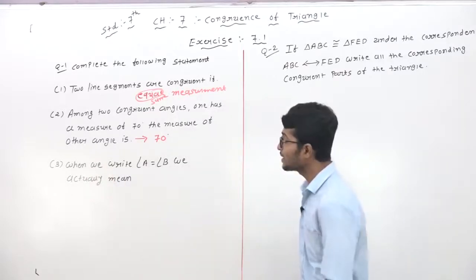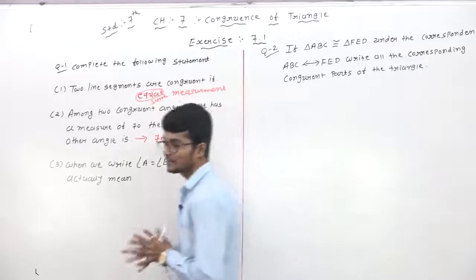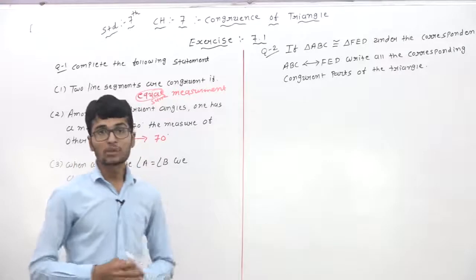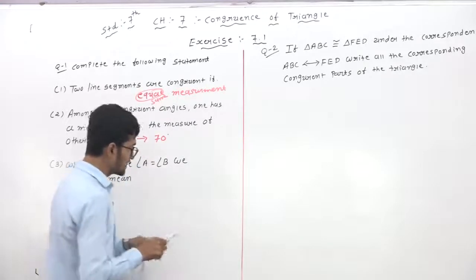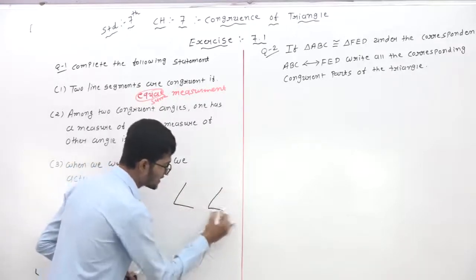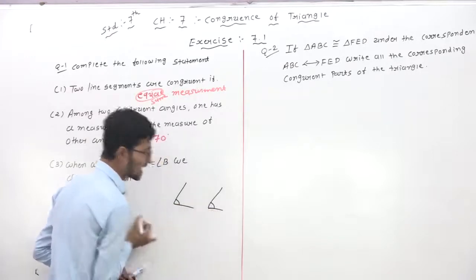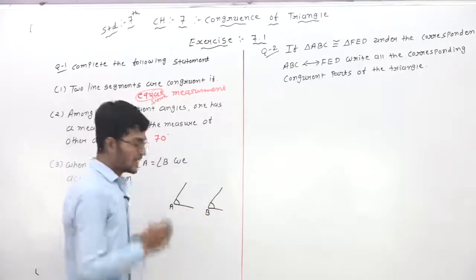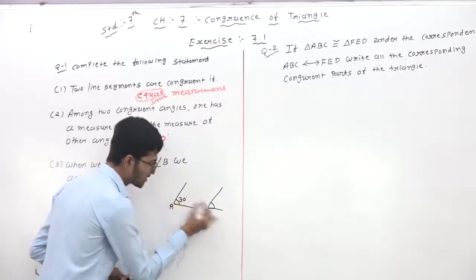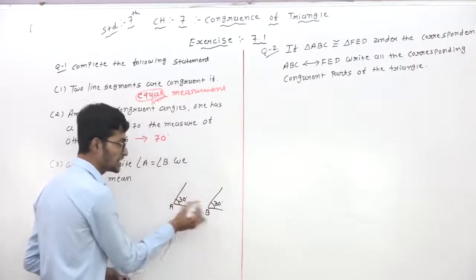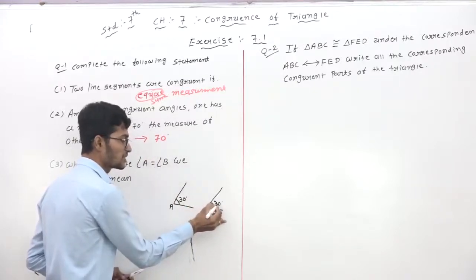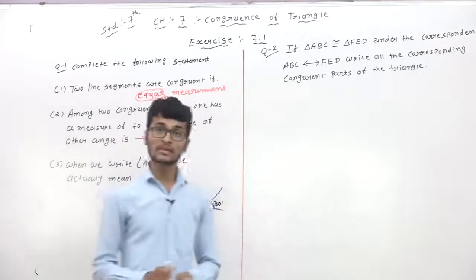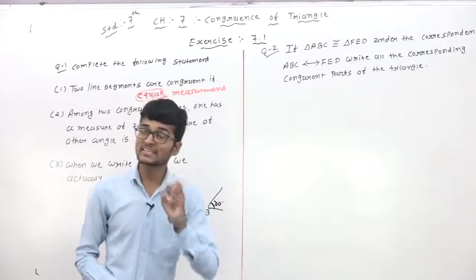Next, the third question: when we write angle A is equal to angle B, we actually mean... Suppose angle A and angle B — these two angles are the same. Here angle A has a measurement of 30 degrees and angle B also has a measurement of 30 degrees. Then and then we write angle A is equal to angle B.